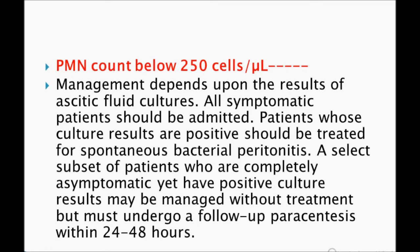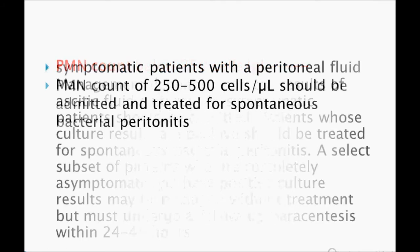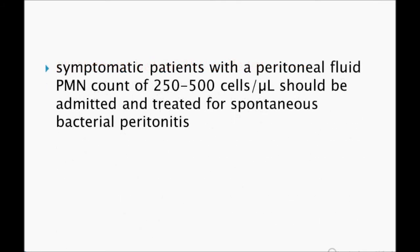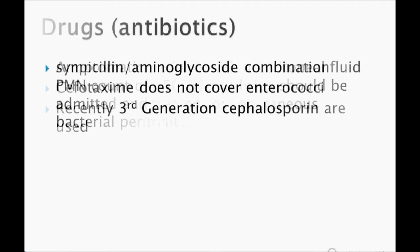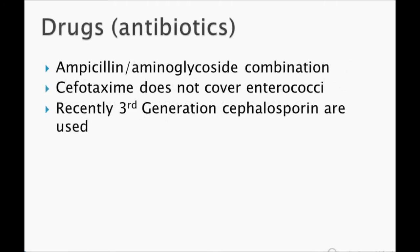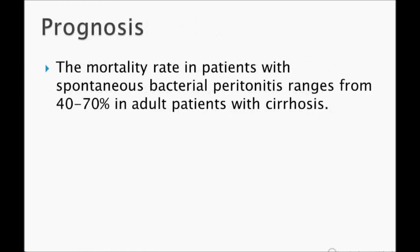Asymptomatic patients with negative cultures may be managed without treatment but must undergo follow-up paracentesis within 24 hours. Symptomatic patients with peritoneal fluid PMN count of 250 to 500 should be admitted and treated for spontaneous bacterial peritonitis. Antibiotics used include the ampicillin and aminoglycoside combination — the traditional regimen. Cefotaxime does not cover enterococci, so it is not used; recently, third-generation cephalosporins are used.